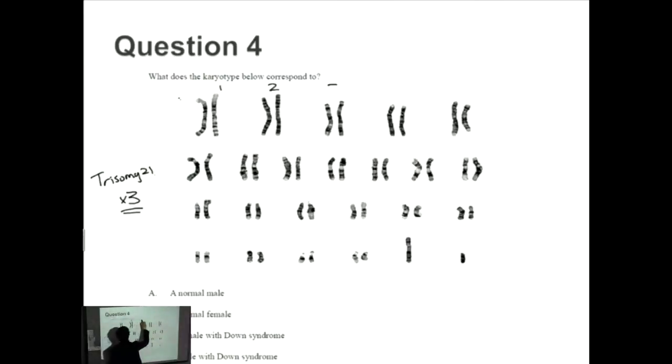So I've got 1, 2, 3, 4, 5, 6, 7, 8, 9, 10, 11, 12, 13, 14, 15, 16, 17, 18, 19, 20, 21. Aha! So for 21, there's only two copies here, so it's completely normal. So they do not have Down syndrome. So we can get rid of C as well as D.